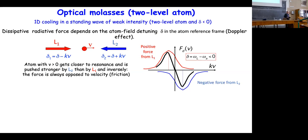If atoms can move in either direction, you shine two counter-propagating lasers on the atom — both tuned below resonance (red-detuned). If the atom moves from left to right with positive velocity, it is closer to resonance with the laser coming from the right, and the Doppler effect brings it away from resonance with the laser from the left. The opposite occurs if the velocity is reversed.